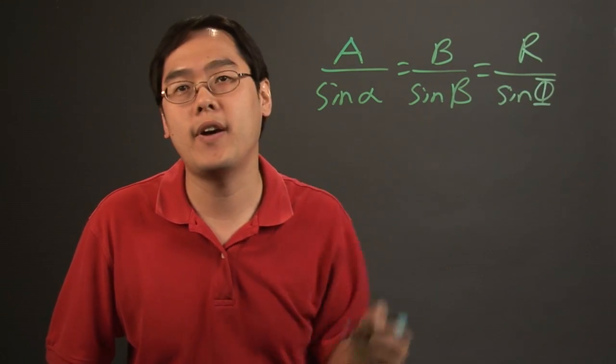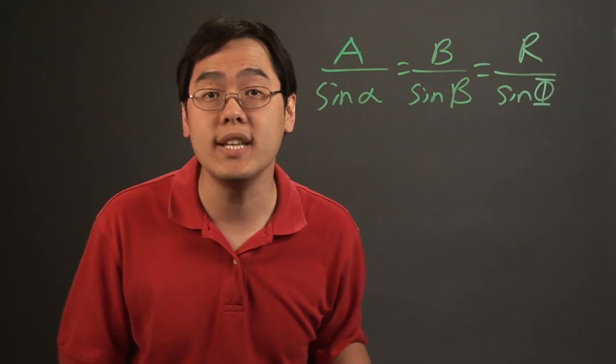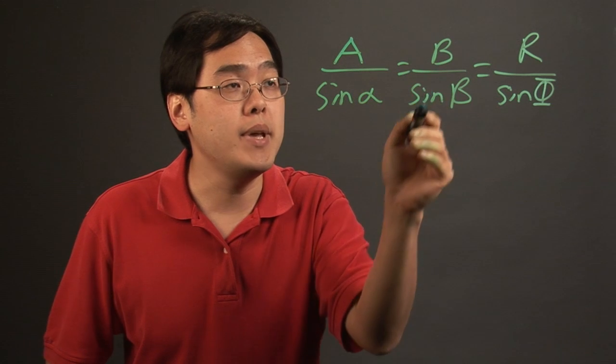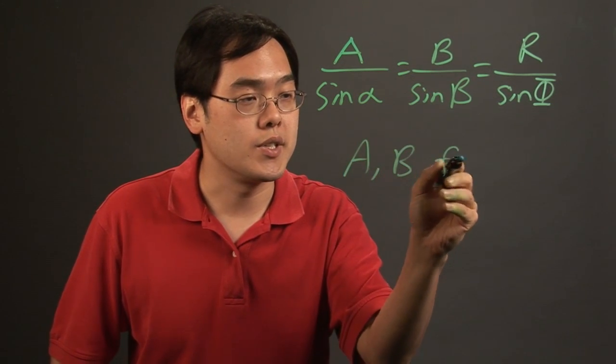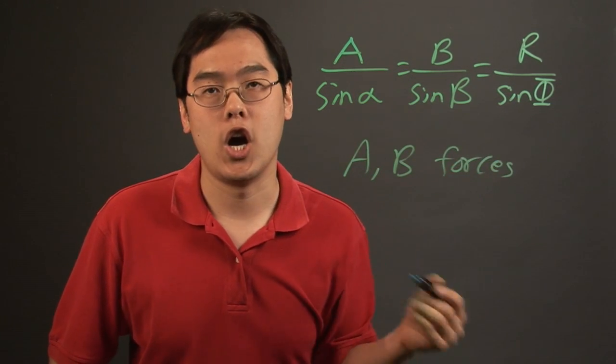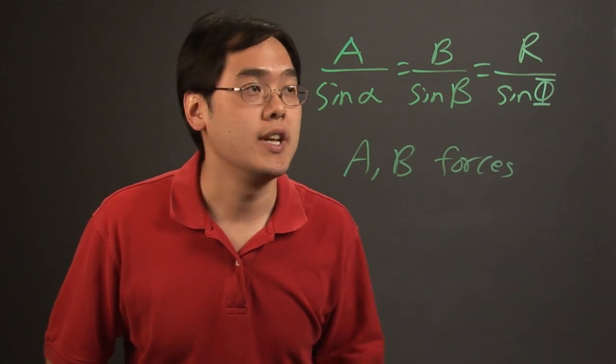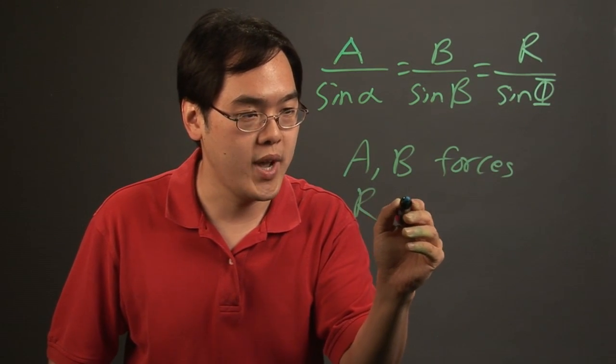Now alpha, beta, and phi are angles which you will need, but A and B are forces that are acting on the situation, and R is the resultant weight.